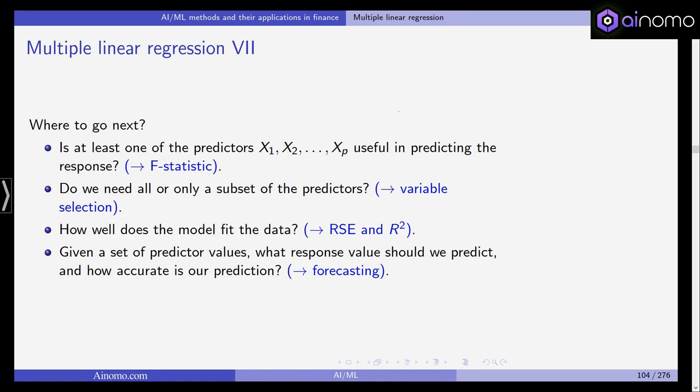For example, in the one-dimensional case, we have these observations and we've estimated a regression line. If this is the estimated regression line and we get a new X value which is here, then this would be the predicted and forecasted value. Or if we forecast this, probably here, because this is an extension of the linear line.